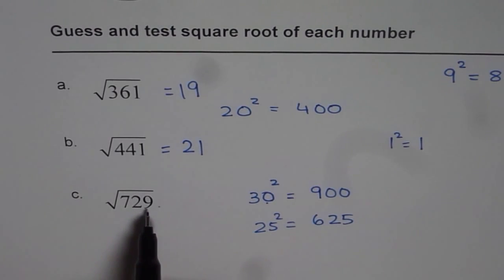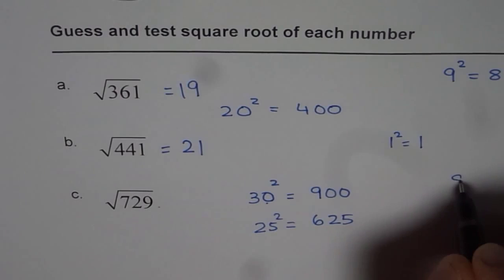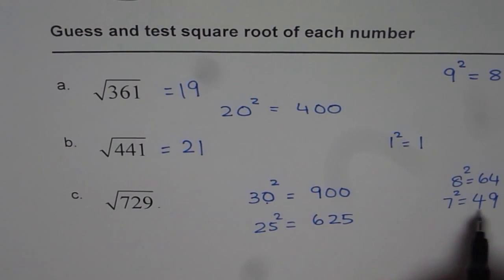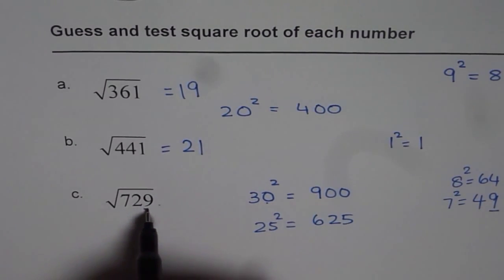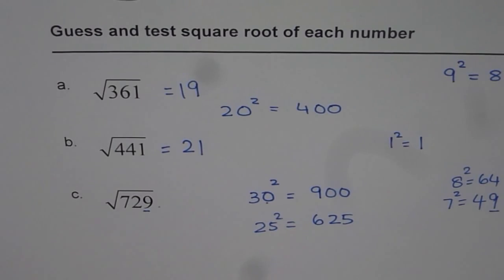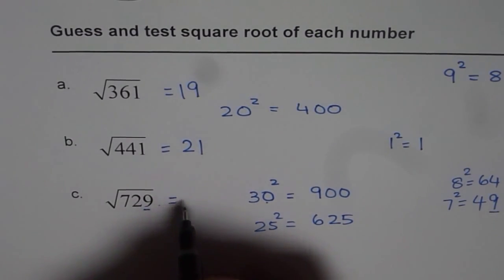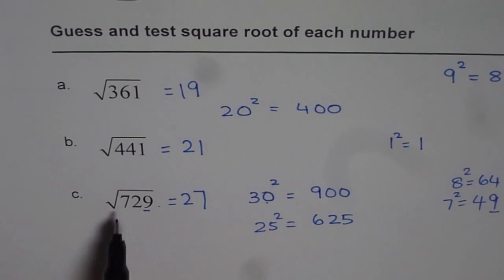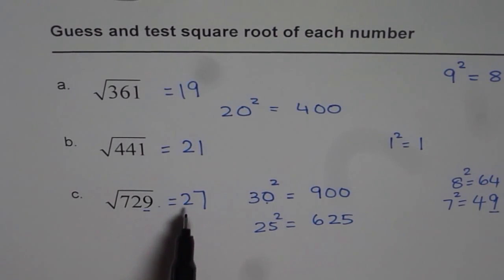Now we are having 9 as the last unit. Now what is 8 square? 8 square is 64 and 7 square is 49. Since 7 square is 49 matches with my last number, my guess for this is 27. So square root of 729, I guess it as 27.